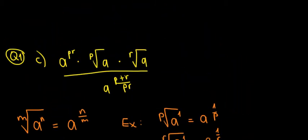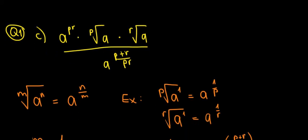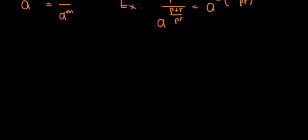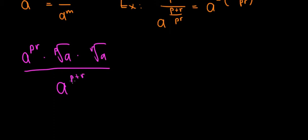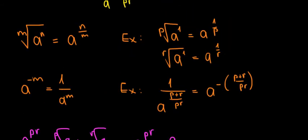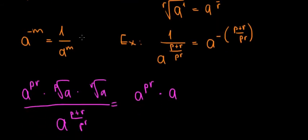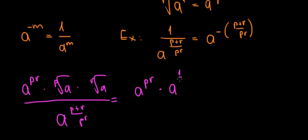With this in mind we can rewrite the full expression. We have: a to the power pr, times a to the power 1 over p — since p root of a equals a to the power 1 over p — times a to the power 1 over r, times a to the power negative p plus r over pr.